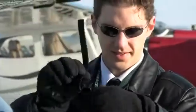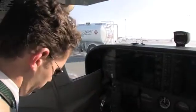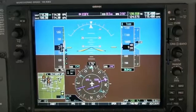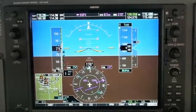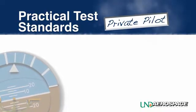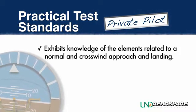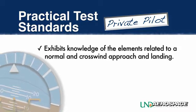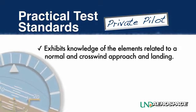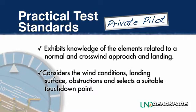Now that the premise of the normal landing has been established, the standards to which a pilot must demonstrate are found in the appropriate PTS. These standards focus on safety and vary very little between private pilots and commercial pilots. Pilots meeting the PTS standards exhibit knowledge of elements related to a normal and crosswind approach and landing. They consider the wind conditions, landing surface, obstructions, and select a suitable touchdown point.